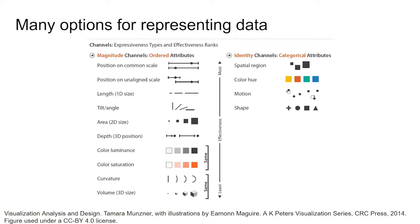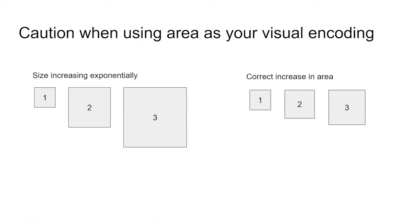For categorical attributes such as country, species, and blood type, spatial region or the location on the chart is the most effective form of expression. If you choose to use different size shapes as your visual channel, do so with caution, as when shapes change we compare areas, so the data point should map to the area and not just the length of one side or the diameter.